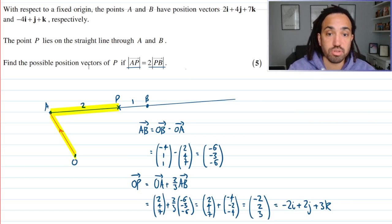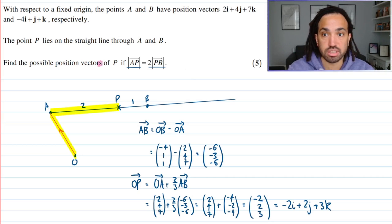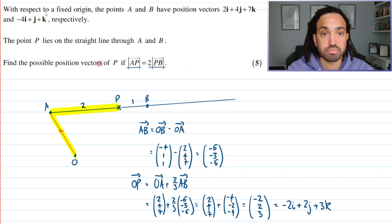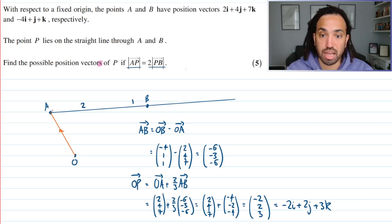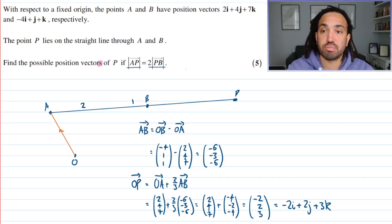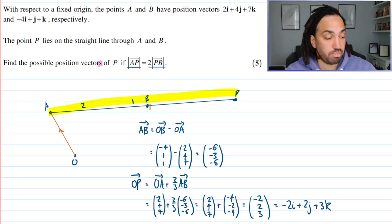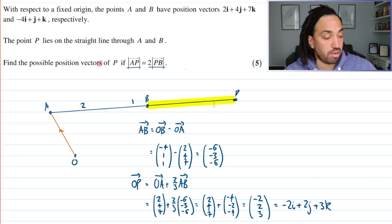Now noticing that there's a plural here, it says position vectors is very important because there is another solution to this problem. So let's figure out where else P could be in order to satisfy that condition. So all I need is I need that the line A to P needs to be twice as big as P to B. So I could put it right here at the end like that because that way the line A to P is twice the line B to P which would just be this one. So that works out nicely.